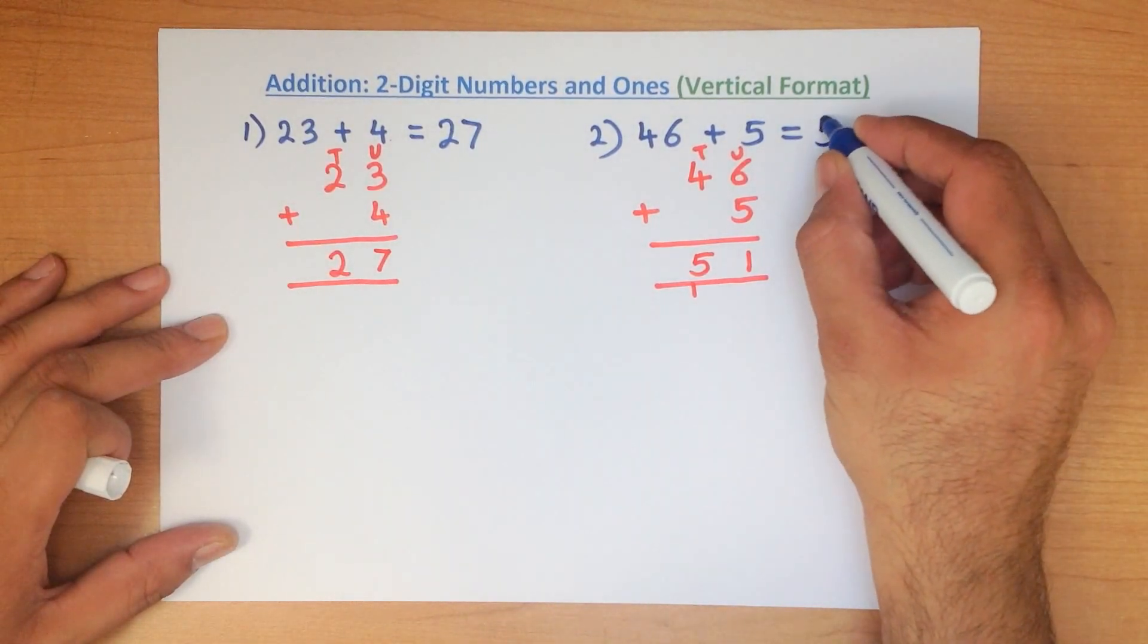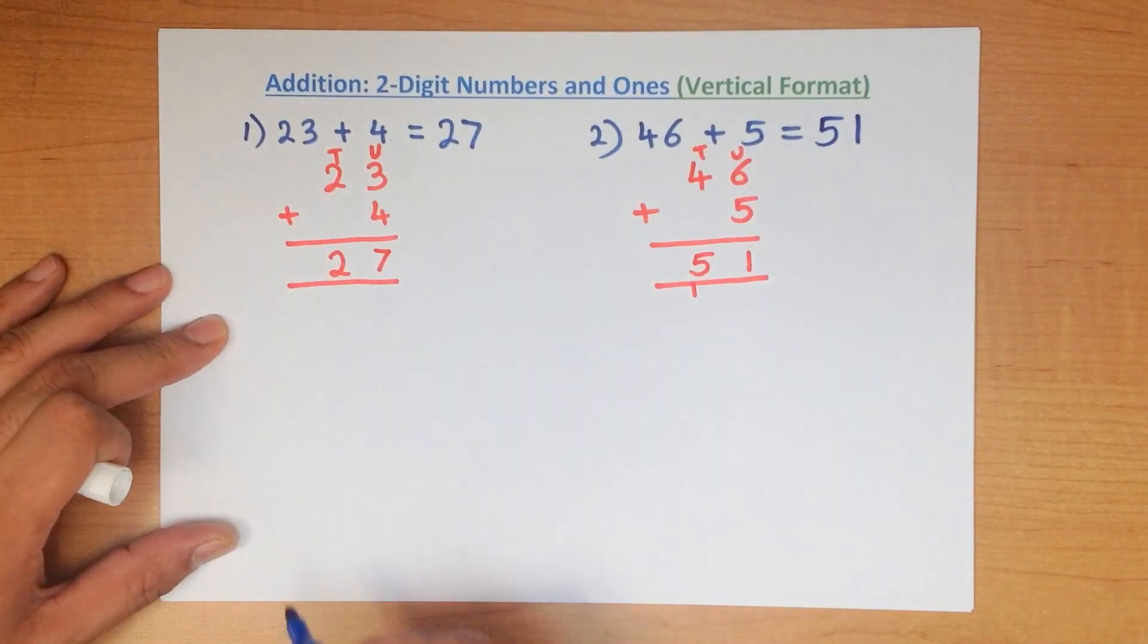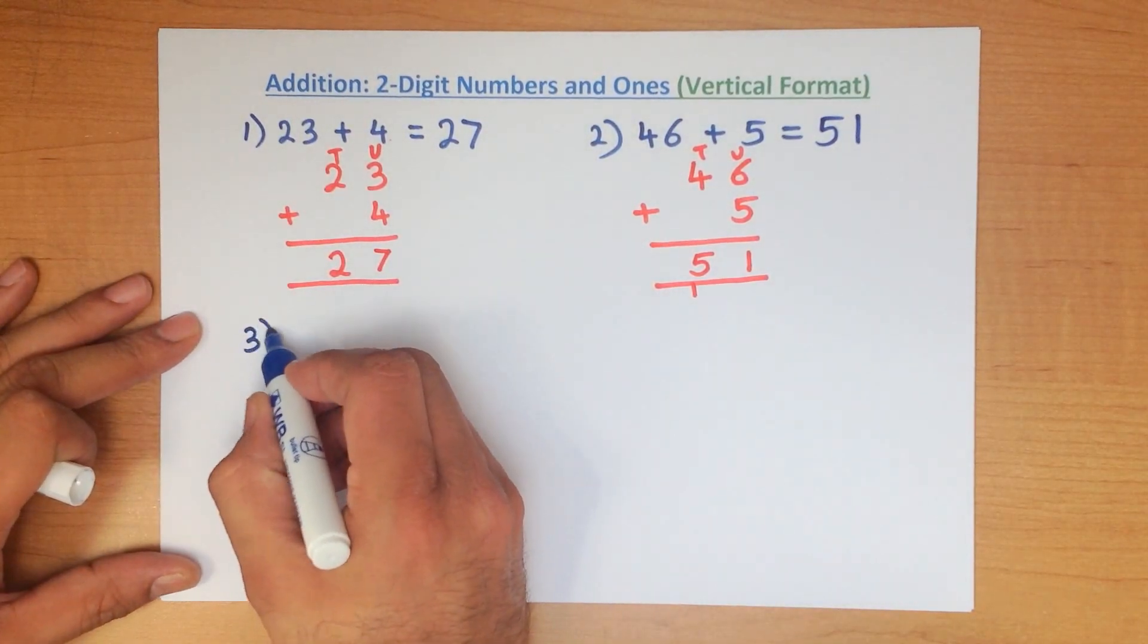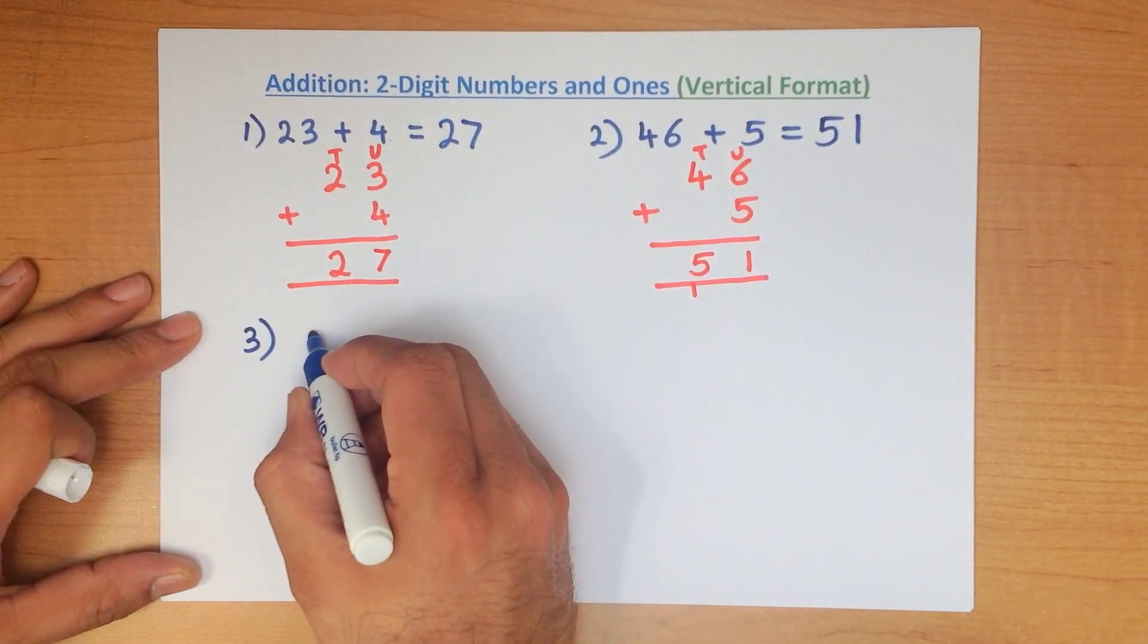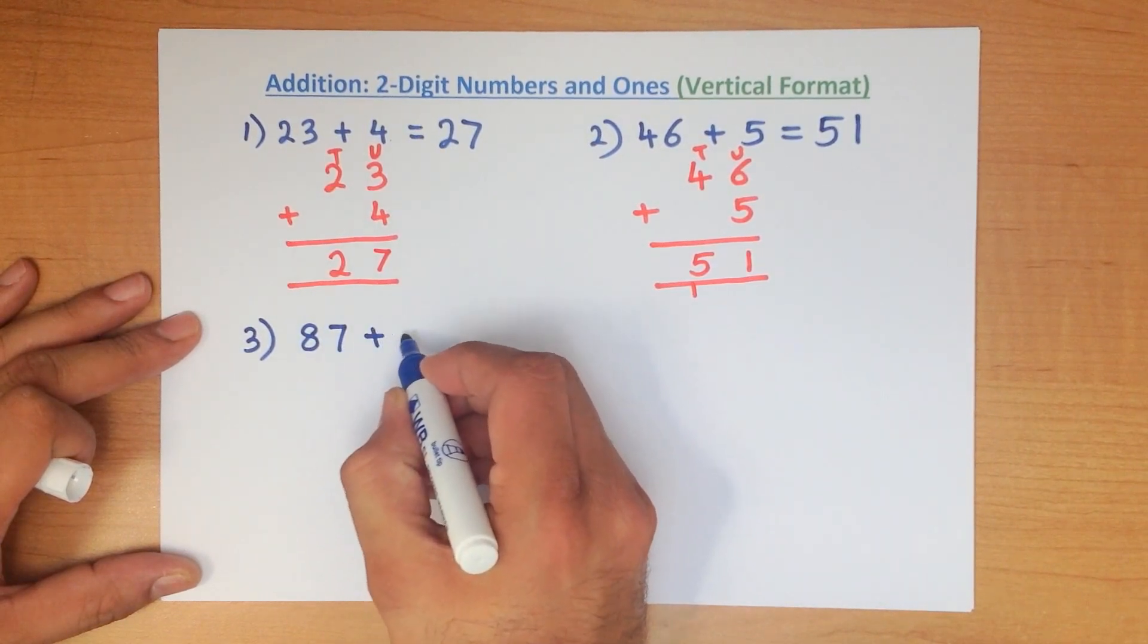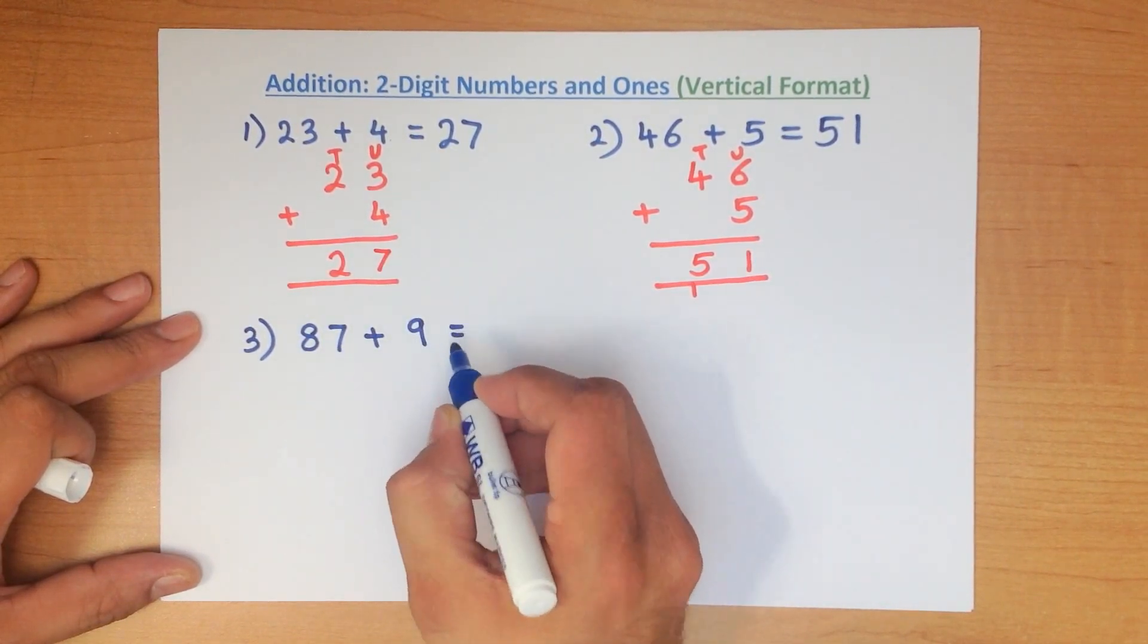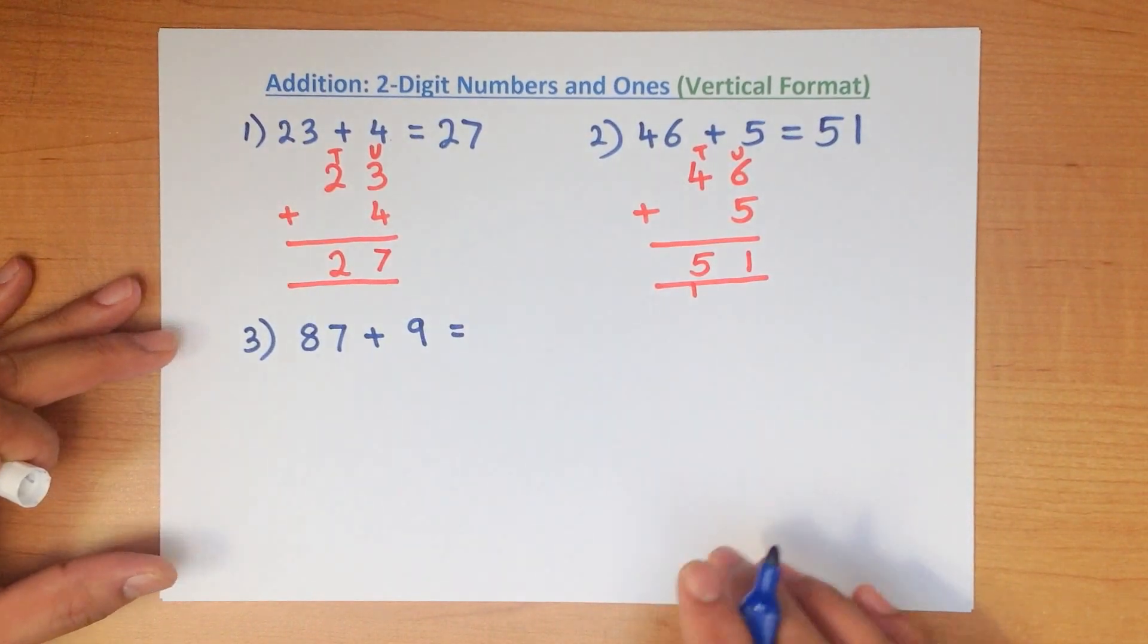Let's write that down. Let's look at one final example. What is 87 plus 9?